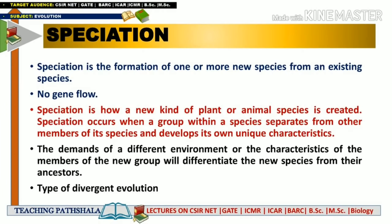For being a distinctive species, that species group should have some unique characteristics and will shift to a different environment or habitat. They will not reside in the same environment and will have different characteristics compared to the original species group. The demand of a different environment or the characteristics of members of the new group will differentiate the new species from their ancestor, and the existing species group will be regarded as the ancestor of the new species.